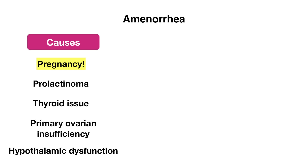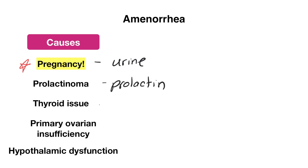Let's go over causes of amenorrhea, in particular secondary amenorrhea. The first and most commonly overlooked cause is pregnancy — make sure to rule this out first. Other causes include a prolactinoma, thyroid issue, primary ovarian insufficiency, and hypothalamic dysfunction. To evaluate: obtain a urine pregnancy test for pregnancy; prolactin level for prolactinoma; TSH for thyroid; and FSH plus estradiol level to check for primary ovarian insufficiency versus a hypothalamic cause.